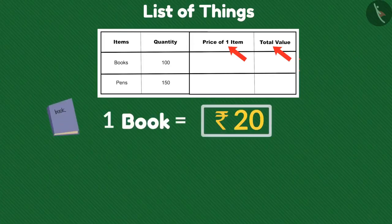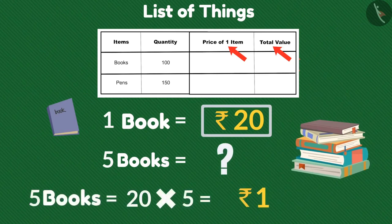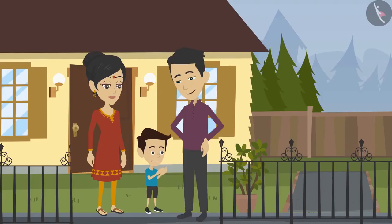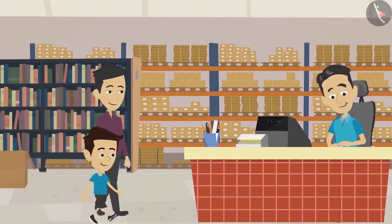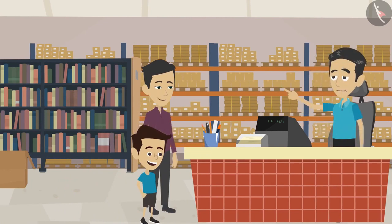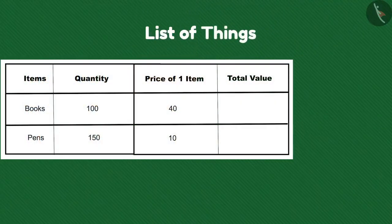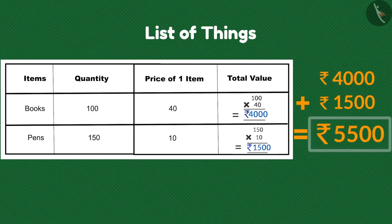Suppose one book costs 20 rupees and you want to buy 5 — that's 100 rupees. At Mohan's shop, one book costs 40 rupees and one pen costs 10 rupees. The cost of 100 books is 40 times 100 equals 4,000 rupees. The cost of 150 pens is 10 times 150 equals 1,500 rupees. The total cost is 4,000 plus 1,500, that is 5,500 rupees.